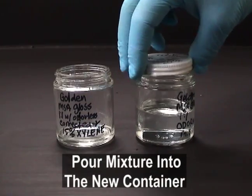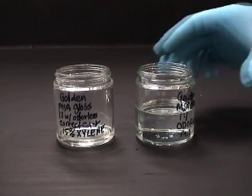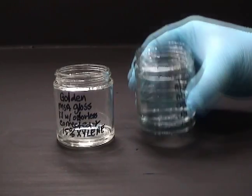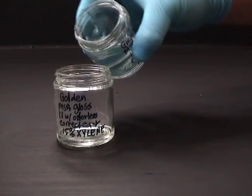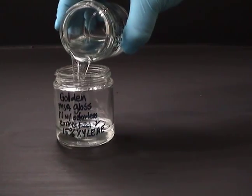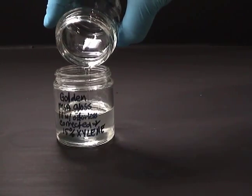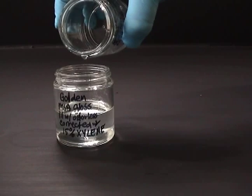Properly label a new container with all the ingredients. Slowly pour over the mixture. Take note if there are any lumps present and prevent them from entering the new container.